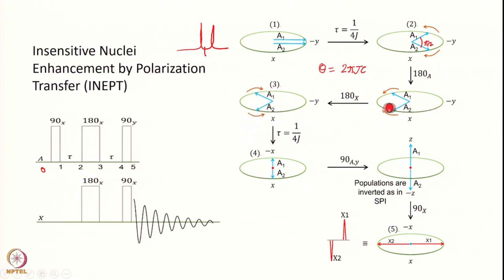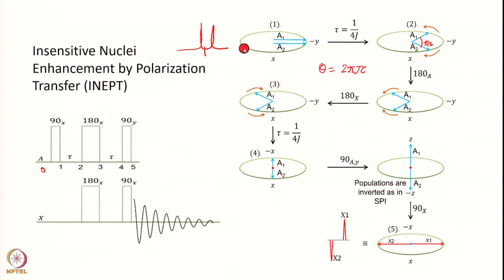So they will now go like this and like this. During the next 1 by 4J period, they will again move away from each other and another pi by 2 phase angle will be introduced. This was pi by 2 here, and this is also pi by 2, but when it moves another pi by 2 is added — now it becomes pi. During the next period another pi by 2 is added there, so now they become opposite to each other — along the X and the minus Y axis.